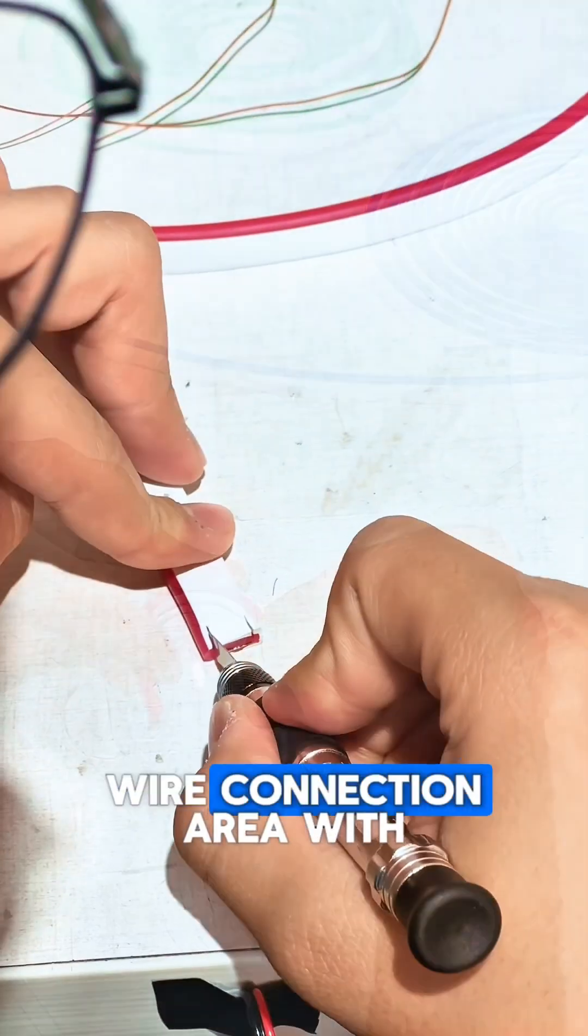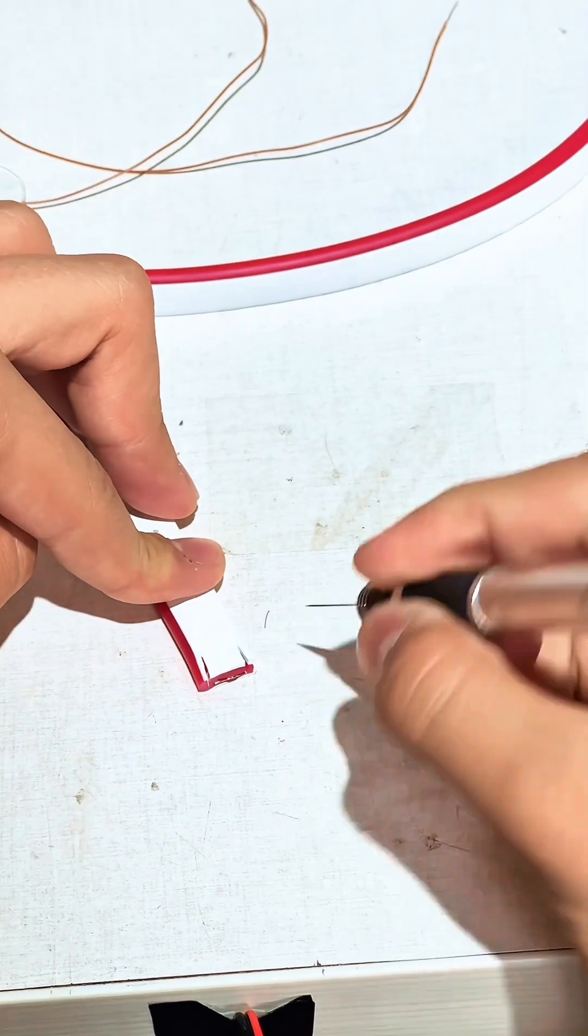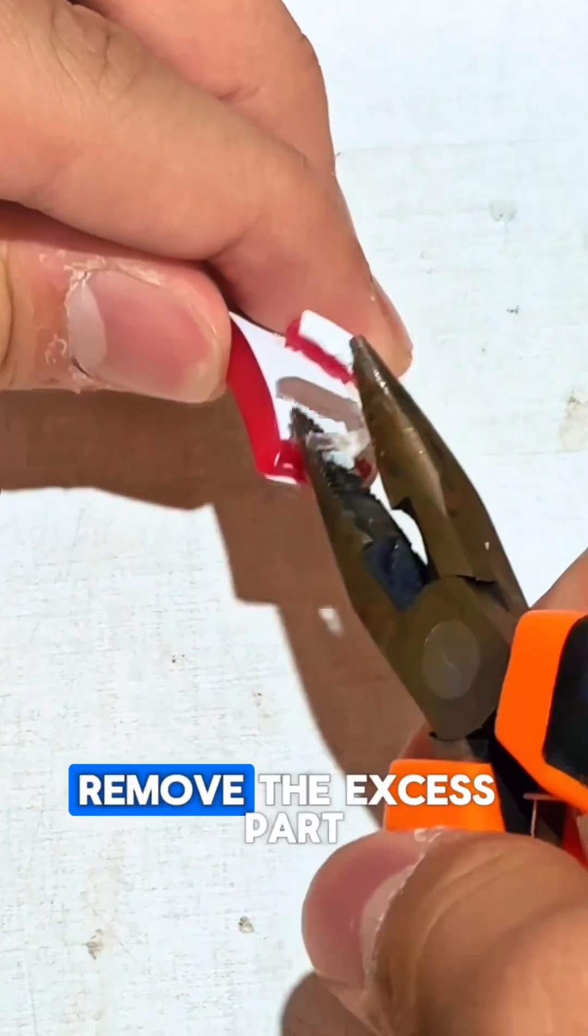Then, we strip the wire connection area with a knife. Remove the excess part using pliers to expose the connectors.